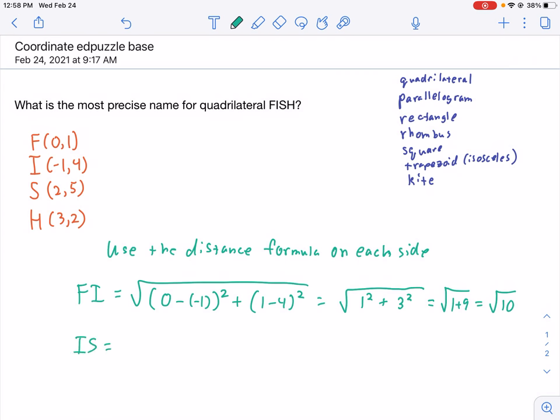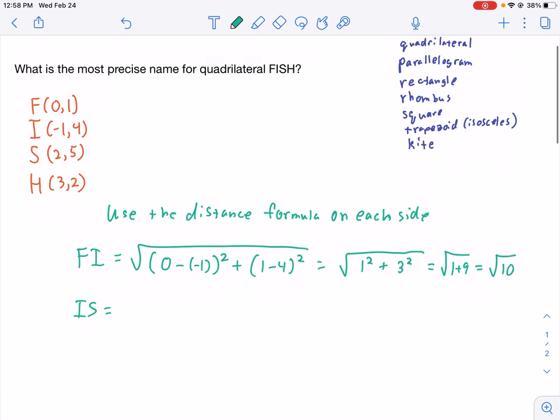Why don't you take a moment to find IS, and SH. Let's see if we got the same answers. So, I'll have a negative 1 minus 2, and a 4 minus a 5. Oh, once again, we've got 3 squared.